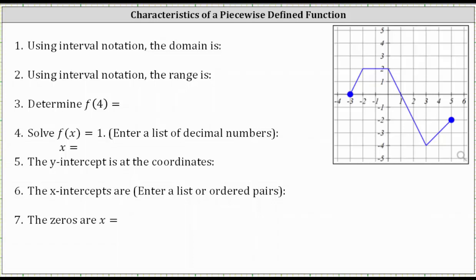Number one, using interval notation, we're asked to find the domain of the given piecewise defined function. The domain is the set of all possible inputs or x values, and therefore to find the domain, we analyze the graph from left to right. Notice the leftmost point on the graph is where x equals negative three, and because the point is closed at x equals negative three, negative three is in the domain of the function.